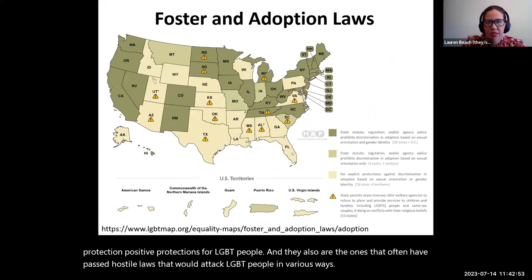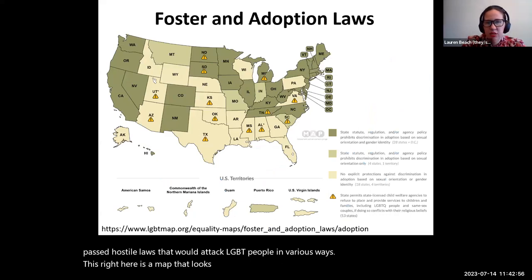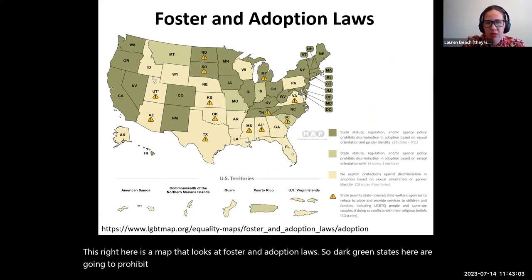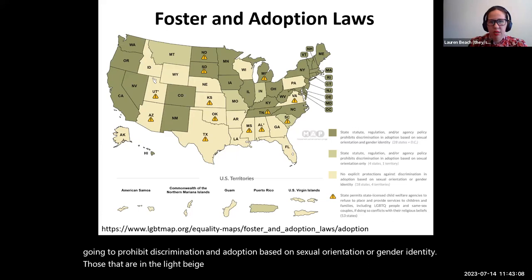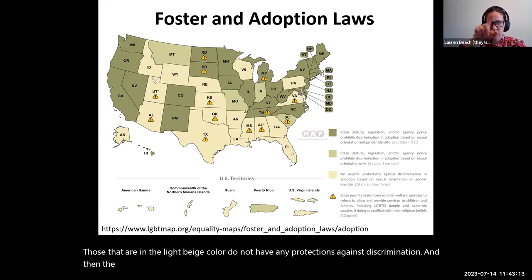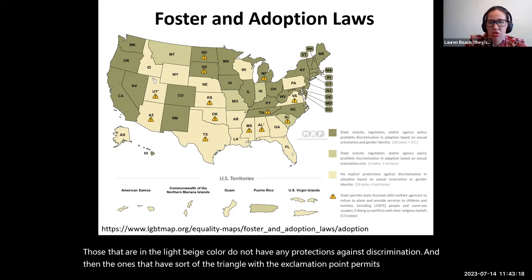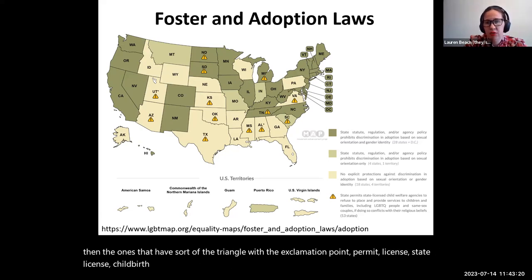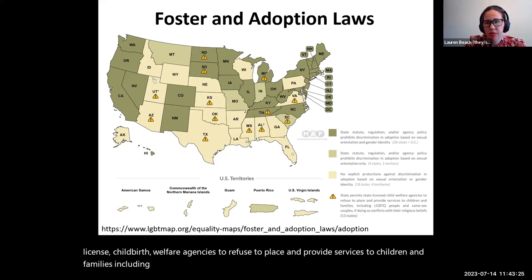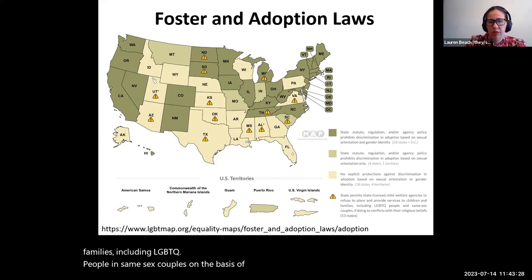This map looks at foster and adoption laws. Dark green states prohibit discrimination in adoption based on sexual orientation or gender identity. Those in the light beige color do not have any protections against discrimination. And then the ones with the triangle and exclamation point permit licensed state child welfare agencies to refuse to place and provide services to children and families, including LGBTQ people and same-sex couples, on the basis of religious belief conflicts.